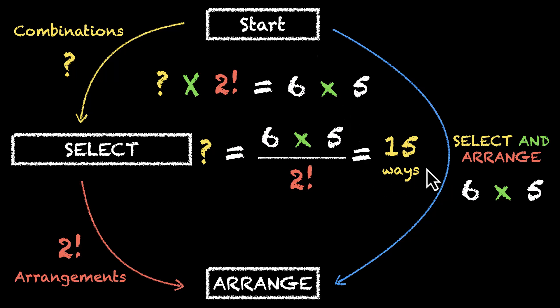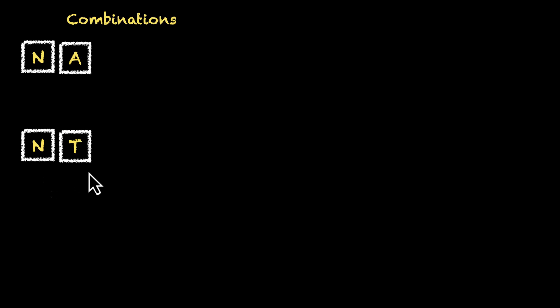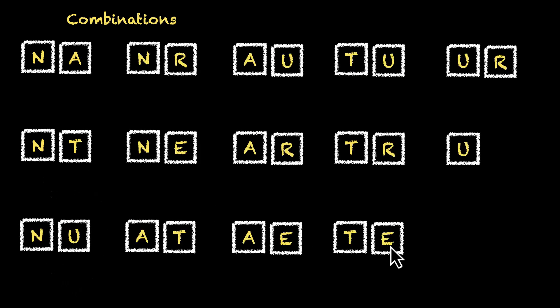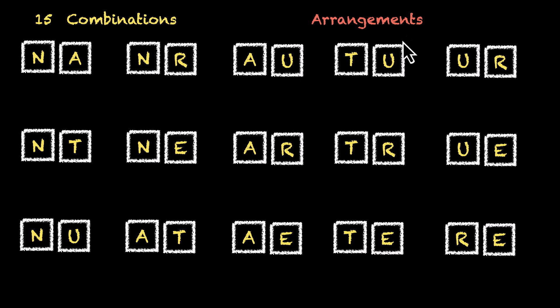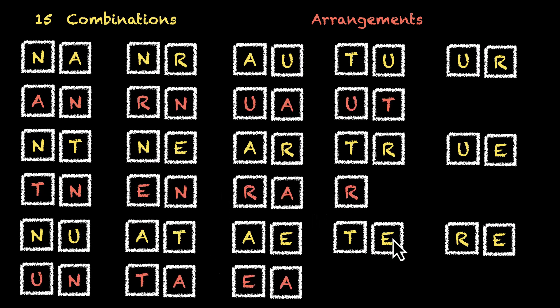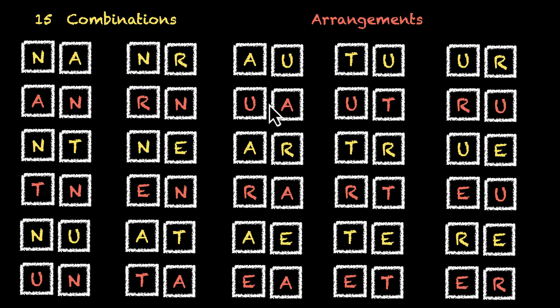If we start with six letters, let's list down all the combinations. If you select the first two letters, we have NA, we have NT, we have NU, and so on — we have these 15 selections. Here, the order does not matter. We're just selecting two letters, so this is one selection: the letter N and the letter A. This is one selection, NA. This is another one, TR, and so on. We have these 15 combinations — 15 selections of two letters. If we arrange these letters to form a word, one word could be NA itself, another could be AN. We can flip the order; these are two different words, NA and AN. Similarly, we have NT as a word and TN as another word, and for each selection we have two words. Here we have 15 times two, that's 30 possible arrangements — the answer we got in the beginning. Six times five is 30, and 15 times two is also 30.